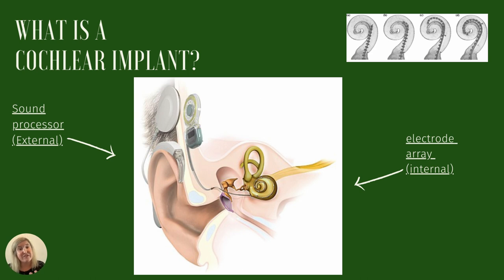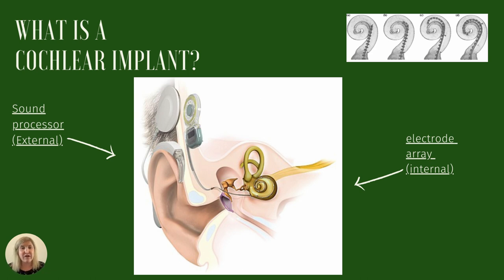In the top right-hand corner of this slide, you will see the electrode array being fed through the cochlea, and from left to right you see the array going deeper and deeper. Then the electrical impulses travel to the brain through the auditory nerve.